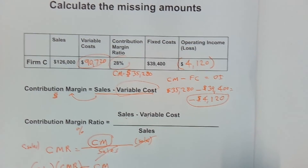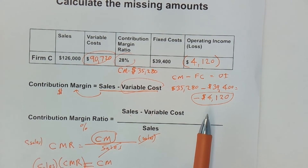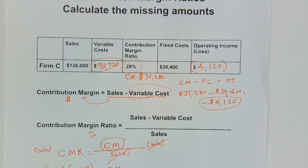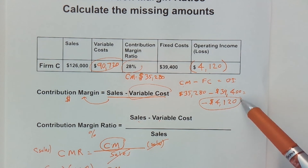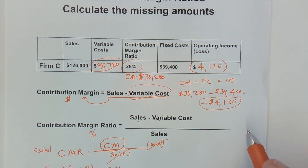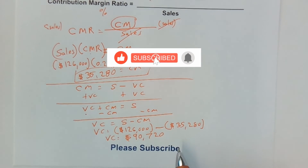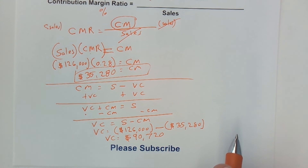That is how you calculate variable costs and operating income. Share this video with someone taking an accounting class who might need help with this. You can also become a channel member — there's a join button below with perks including members-only videos and priority Q&A. Or simply subscribe and hit the notification bell so you never miss a video. Now go out and make it an awesome day!